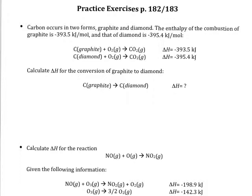Let's take a look at this first problem. They're giving us two different reactions: the reaction of carbon as graphite with oxygen to make carbon dioxide, and the reaction of carbon as diamond with oxygen to make carbon dioxide. They're asking us to find the enthalpy for the overall reaction. Graphite is on the reactant side and diamond is on the product side. In the first reaction, graphite is already where I want it. But in the second one, diamond is not — I want diamond on the product side, so I'm going to need to reverse that reaction.